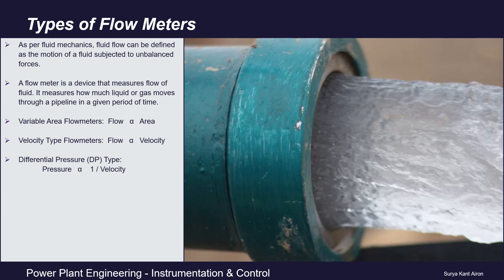We all know that a fluid — basically liquid or gas — flows from high pressure to low pressure. As per fluid mechanics, fluid flow can be defined as the motion of liquid or gas under unbalanced forces. A device used to measure the flow of fluid is called a flow meter, meaning it indicates the amount of liquid or gas that passes through a pipeline in a given period of time.